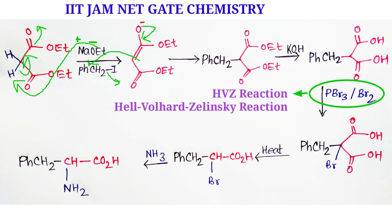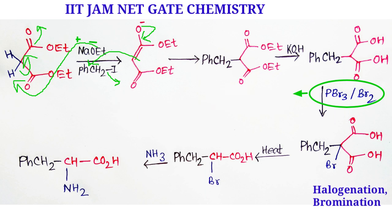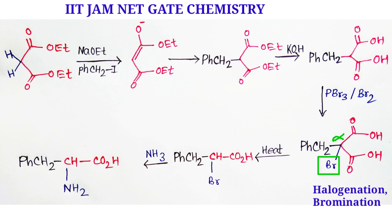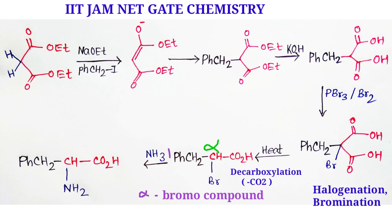Now come to our point. After treatment with HVZ reaction conditions, it generates halogenation. Bromination takes place at the alpha position. Under heating conditions, decarboxylation takes place and we get alpha bromo compound.